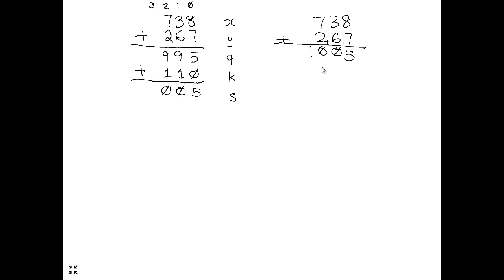There are two sources that can contribute a carry of 1 to the next column. In column 0, it is 8 plus 7 that contributes a carry of 1. In the other columns, it is Q plus K that ends up producing a carry to the next column. So there are two sources where we can end up with a carry of 1. This is a more systematic way of looking at addition, and it is what will allow us to figure out how to perform binary addition.